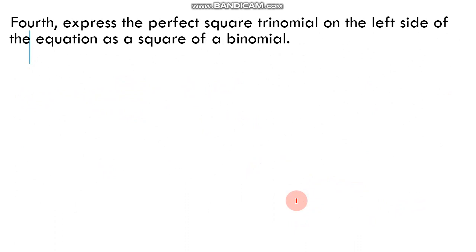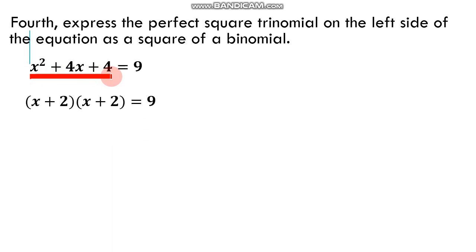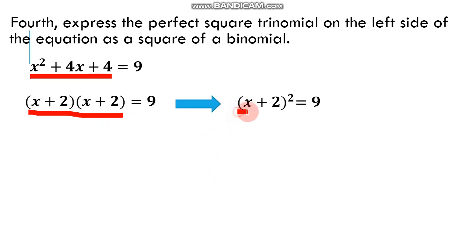Fourth step: express the perfect square trinomial on the left side as a square of a binomial. From x squared plus 4x plus 4 equals 9, we find the factors of the perfect square trinomial. The quantity x plus 2 times the quantity x plus 2 are the factors, so since they are the same, we rewrite this as the square of the binomial x plus 2.